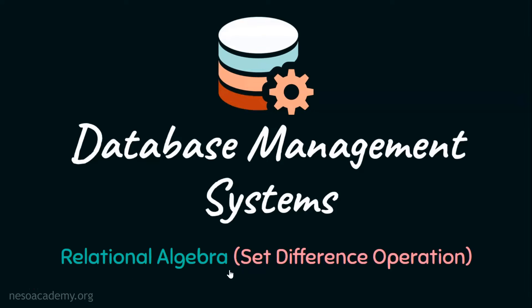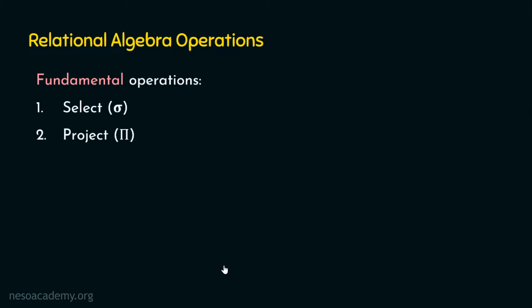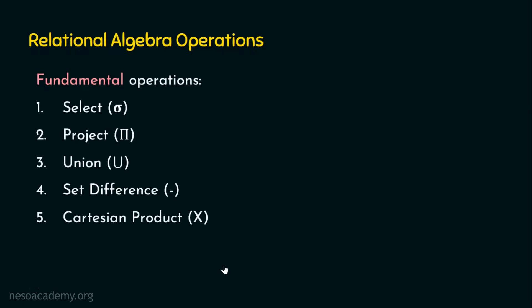We know basically there are six fundamental relational algebra operations. Number one, select. Number two, project. Number three, union. We have already elaborately focused on these three topics in the previous presentations and we are left with three more fundamental operations: the set difference, the Cartesian product, and the rename operation.